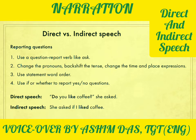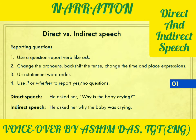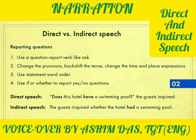Now let's practice changing questions from direct to indirect speech with nine sentences. Sentence one: he asked her, 'Why is the baby crying?' He asked her why the baby was crying. Present continuous backshifts to past continuous — no question mark. Sentence two: 'Does this hotel have a swimming pool?' the guests inquired. This is a yes/no question, so we use 'whether' or 'if': the guests inquired whether the hotel had a swimming pool. Present simple backshifts to simple past.